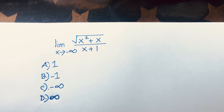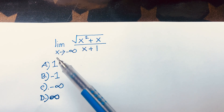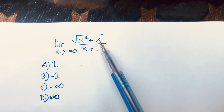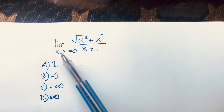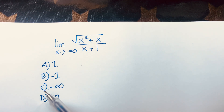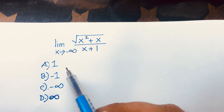Hello everyone! In this video we'll solve this interesting math question. Our question is: limit x tends to minus infinity of square root of (x² + x) plus (x + 1). There are four options: option A is 1, option B is -1, option C is minus infinity, option D is positive infinity. Let's solve this.